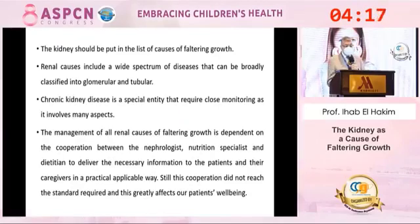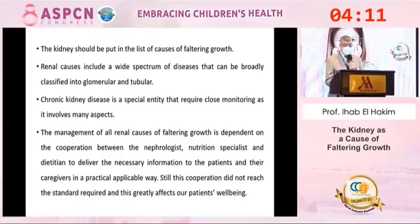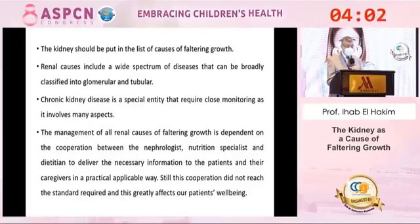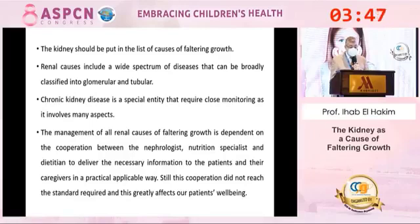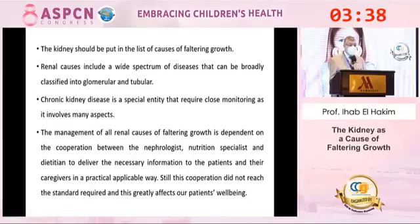In conclusion, the kidney should be placed on the list of causes of faltering growth. Renal causes include a wide spectrum of diseases broadly classified as glomerular and tubular. Chronic kidney disease is a special entity requiring close monitoring as it involves many aspects. Management of all renal causes of faltering growth depends on cooperation between the nephrologist, nutrition specialist, and dietitian to deliver practical, applicable information to patients and caregivers. This cooperation has not yet reached the required standard, greatly affecting our patients' well-being. I hope this will improve in the near future. Thank you.